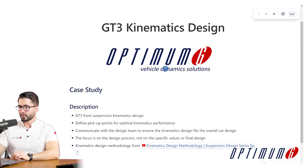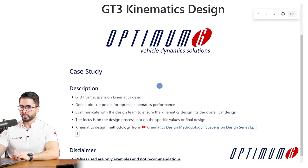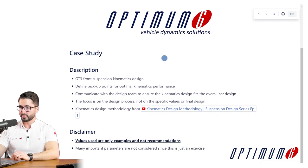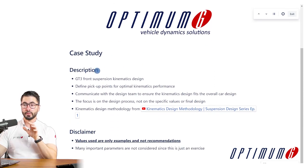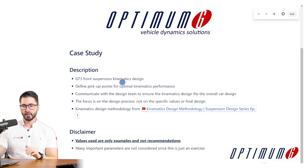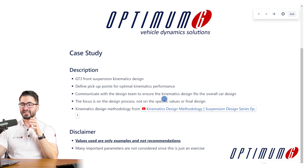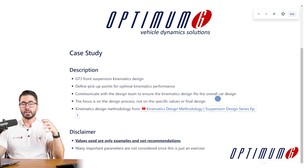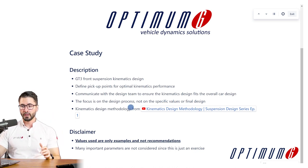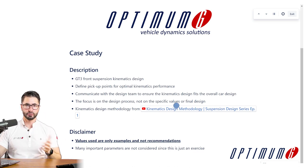So here we are — this is a documentation page that we created that we're gonna be using throughout this series. The case study will be based on designing a GT3 front suspension kinematics. We'll define the pick-up points for optimal kinematics performance. We also need to communicate with the design team to make sure that the kinematics design fits the overall car design. We'll focus on the design process, not on the specific values or final result.